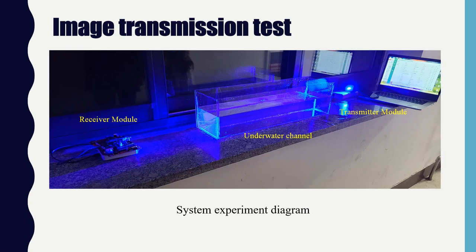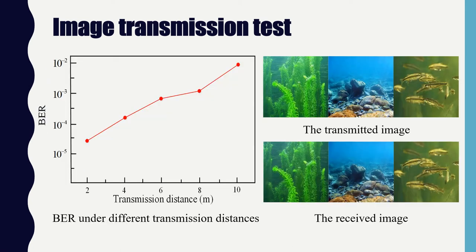This figure is a system test diagram built indoors. A water tank is used to simulate the underwater channel. The figure on the left shows the BER under different transmission distances. In order to better verify the effectiveness of the scheme and simulate underwater image transmission, the same images were divided into three types with underwater gray, blue, and yellow backgrounds. The figure on the right shows the transmitted images and the received images. It can be seen from the figure that the three received images are almost the same as the original images, with only some details blurred.